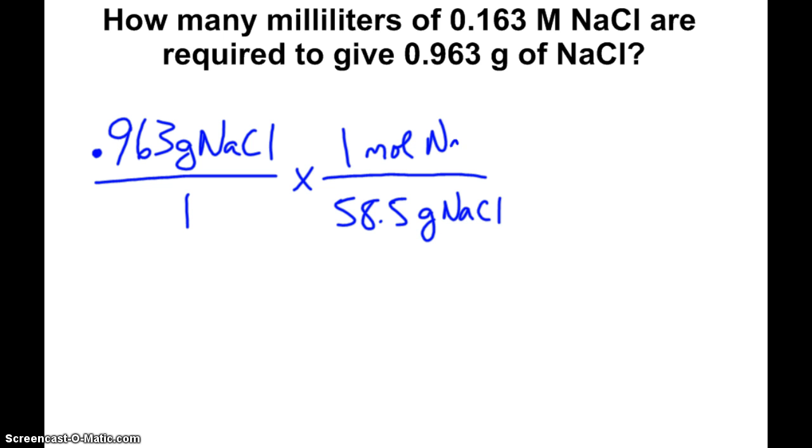So, 58.5 grams of sodium chloride is how much one mole is. 23 for the sodium, 35.5 for the chlorine. And so I can use my molarity to switch to the volume. 0.163 molar means 0.163 moles per liter. But since the question asked me for milliliters, I know that 1,000 milliliters is one liter, so I'm good to go that way.